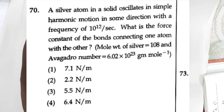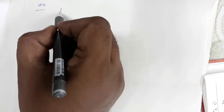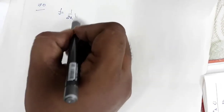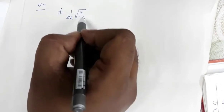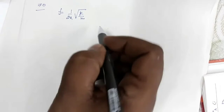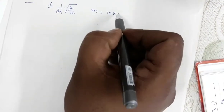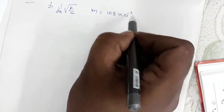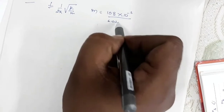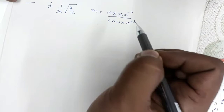Question number 70 asks to calculate the force constant, given the frequency. The formula is f = (1/2π)√(k/m), where m is the mass of the silver atom. The molecular weight is given as 108 grams, so m = 108×10⁻³ kg divided by 6.023×10²³.